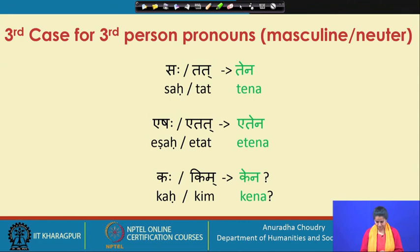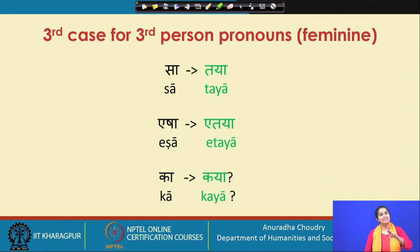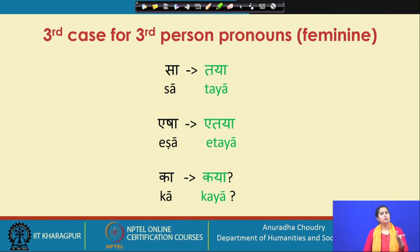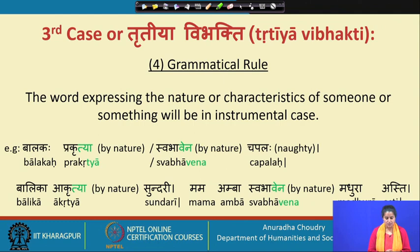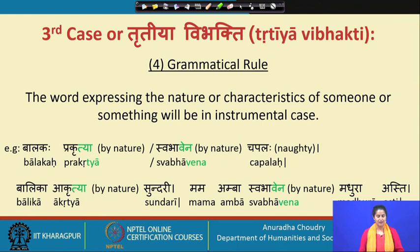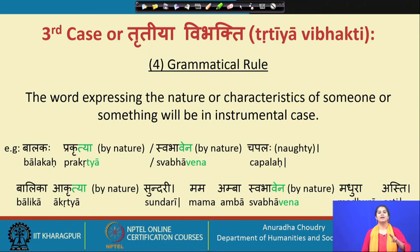Now we come to today's new content. The fourth grammatical rule says that the word expressing the nature or characteristics of someone or something will be in the instrumental case. So if you say 'by nature a person is like that,' the 'by nature' word will be in the third case. For example: balakaha prakritya or svabhavena chapalaha asti — the boy is by nature naughty.